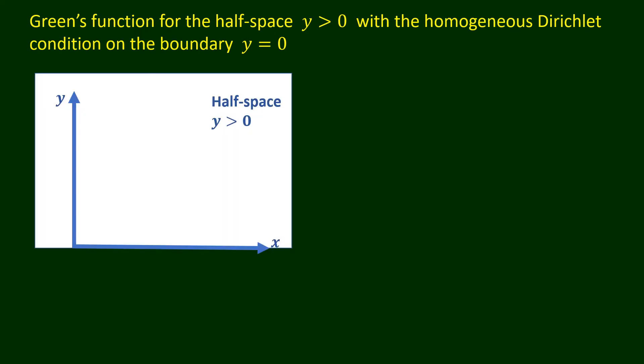Here is a sketch of the half space y strictly greater than 0. Let (x, y) and (xi, eta) be points in the interior of the half space. The point (xi, minus eta), which lies outside the half space, is the mirror image of the point (xi, eta) about the x-axis. The distance separating (x, y) and (xi, eta) is denoted by s1, while the distance separating (x, y) and (xi, minus eta) is denoted by s2.